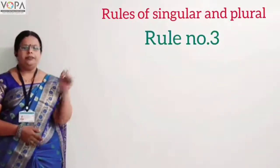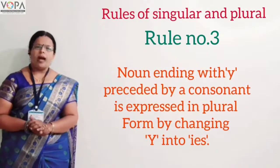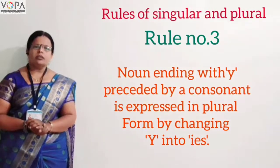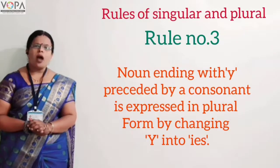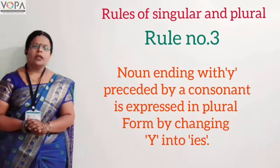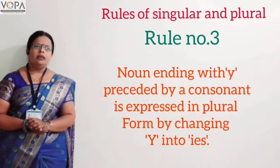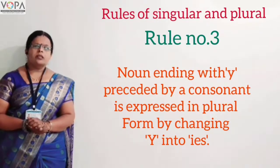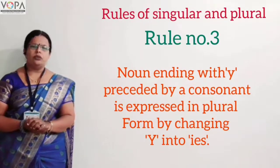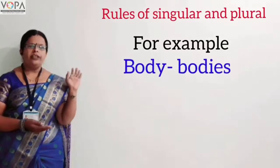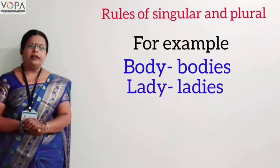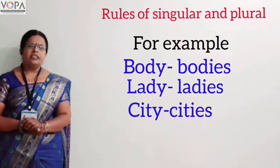Rule number three. A noun ending with 'y' preceded by a consonant forms its plural by changing 'y' into 'ies'. For example: body → bodies, lady → ladies, city → cities.